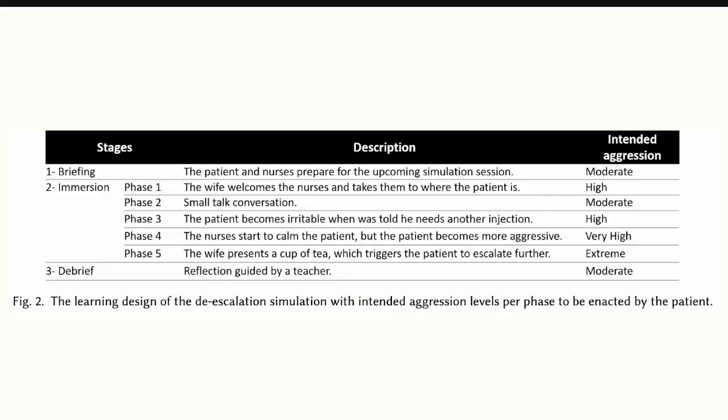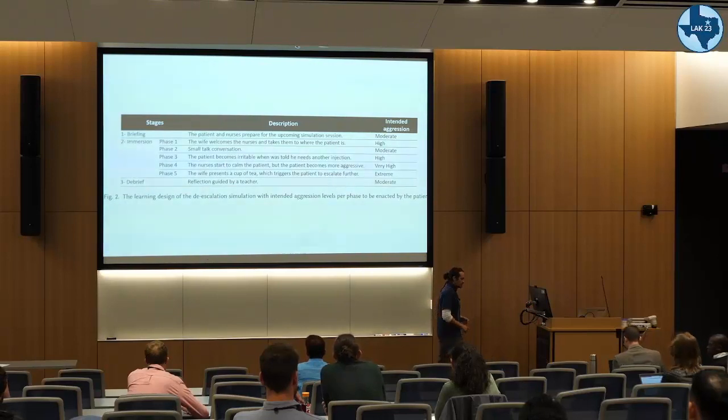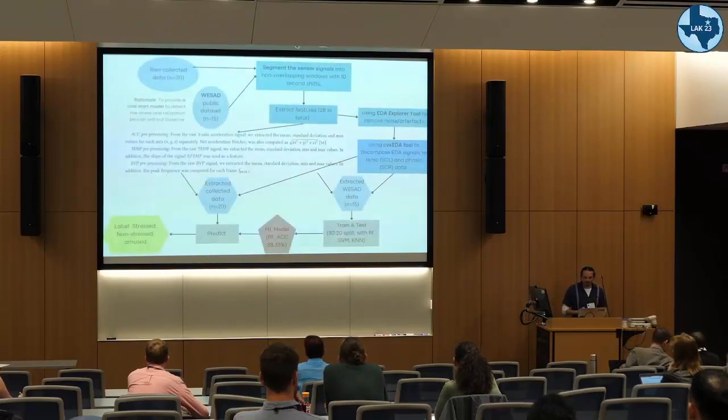This is a description of how the learning immersion happened. The learning design was completely in the wild. There was a briefing at the beginning and then five phases of the scenario based on a script. The actor had this script and had to elevate his voice and aggression. The teachers already had a hypothesis about the intended levels of aggression and stress, ranging from moderate to high until extreme when there was some kind of violent reaction. It was a very interesting opportunity for using multimodal emerging analytics.